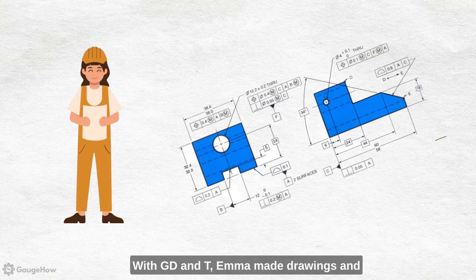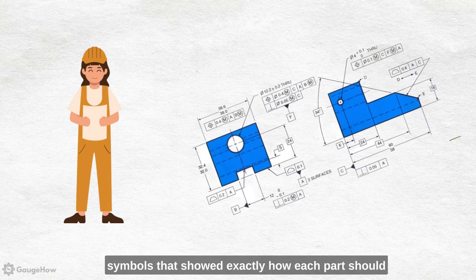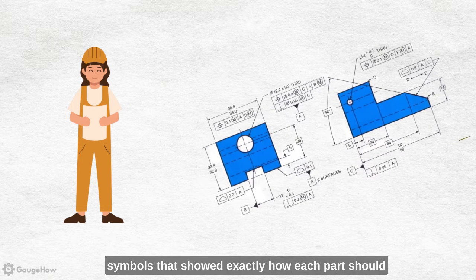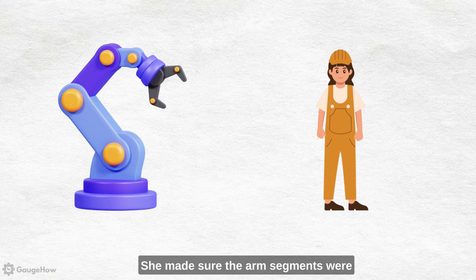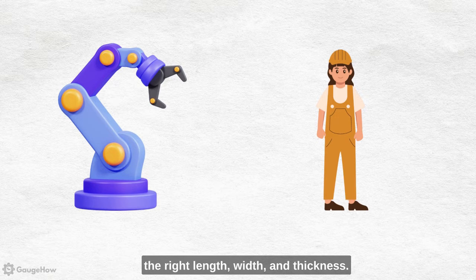With GD and T, Emma made drawings and symbols that showed exactly how each part should look and how much variation was allowed. She made sure the arm's segments were the right length, width and thickness.